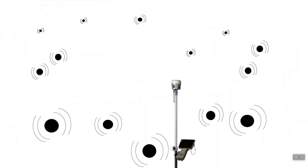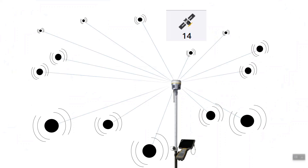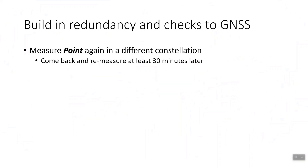We're out there with our R10s, our R8s, whatever receiver we have, and we're tracking a whole bunch of constellations. In this example, I've got like 14 satellites. We all know that we need to build checks into measurements when we're taking a GNSS measurement. One way we do that is to re-measure a point in a different constellation — shoot a point in the morning, come back at least 30 minutes later when the constellation has changed, and shoot it again with the same name, then compare the two points. If they check, that means we have a good independent check that those points are good.